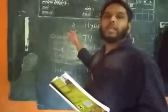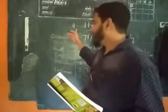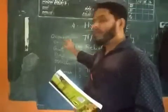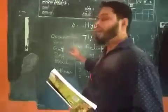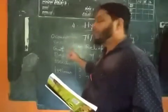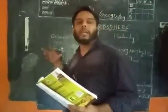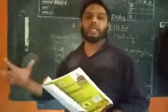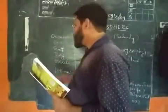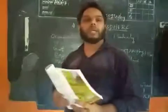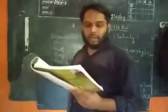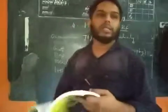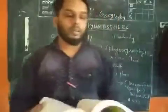An ocean is comparatively larger than a sea, and seas are smaller in size. Gulf and bay are water bodies penetrating into the interior part of land. Strait and isthmus are shapes made by water bodies. These are the different types of water bodies we studied in previous classes.